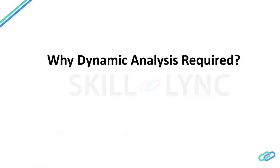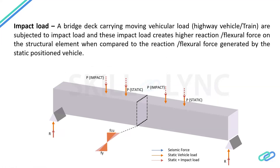Let us see why dynamic analysis is required. We classify two things: one is the impact load due to the moving load, and the second one is seismic load. For impact load — consider a bridge. When the wheels are in static position, the beam will deflect with some bending moment, shear, and stresses in the extreme fiber. But when the vehicle moves, the beam will be subjected to additional deformation due to impact loads and some additional reaction, bending, and stresses in the extreme fiber. So we need to compute and design the structural element for that.